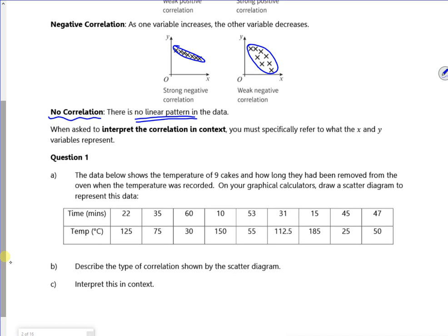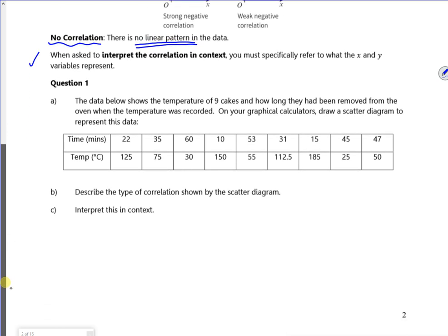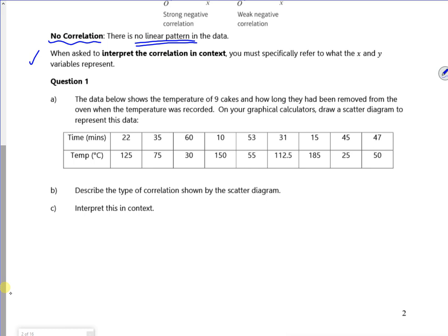So it says, if you're asked to interpret the correlation in context, you must specifically refer to what x and y represent. That's really important. You can't just say positive correlation. You've got to say there's a positive correlation between the number of days it rains and the number of times I'm unhappy, that type of thing. Right, so let's have some questions then.